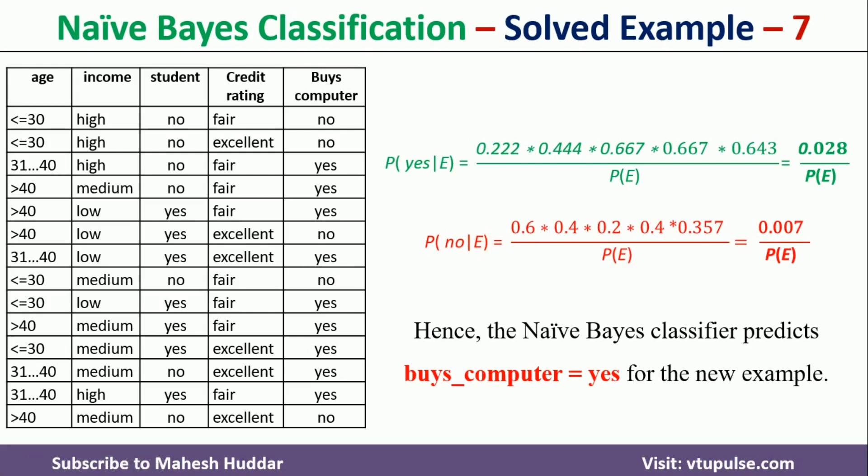This means the person will buy the computer. In this video I discussed how to apply the Naïve Bayes classification algorithm to a given dataset and classify a new example into one of the classes. If you liked the video, please like and share with your friends, press subscribe for more videos, and the bell icon for regular updates. Thank you for watching.